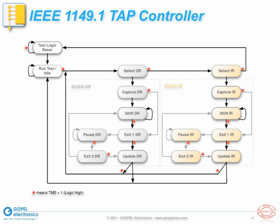The states are colored differently on this diagram. The seven states with the suffix IR work with the instruction register of the device, while the seven gray states with prefix DR on the center-left side of the diagram work with the test data register currently selected by the active instruction.